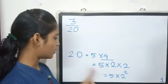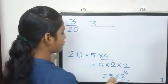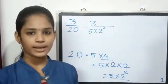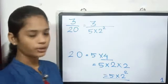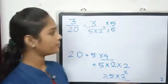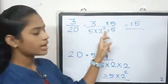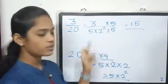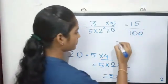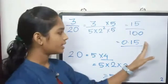20 as denominator will be 5 into 2 squared. I will multiply by 5 in the numerator and denominator. 5 into 3 is 15, divided by 2 squared. 5 into 5 is 25. 25 into 4 is 100. I will convert to decimal formula.